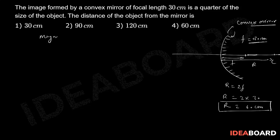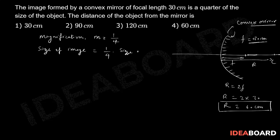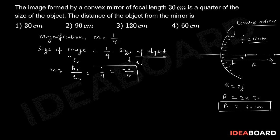One important parameter they have given is that magnification m is equal to 1/4, because the size of the image is equal to one-fourth the size of the object. So, if hi is the image height and ho is the object height, magnification is defined as hi divided by ho. From this relation, m is equal to 1/4, which is also equal to minus v upon u for mirrors.